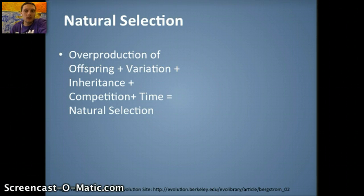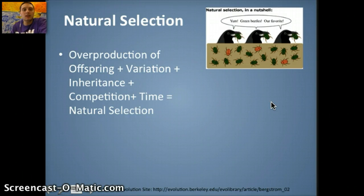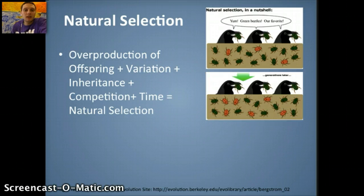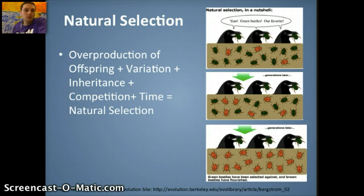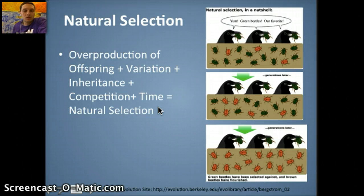Here's a quick example from UC Berkeley. Let's say we have a population of birds that eat beetles, and green beetles happen to be their favorites. In this population there's variation in beetle color, and the birds continue eating the green beetles because that's what they prefer. Eventually, over multiple generations, there won't be any green beetles left because the green alleles are not fit for the environment — predators are eating those. As a result, the population shifts through natural selection to an orange or red color, because the green alleles are removed from the population.